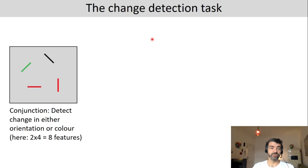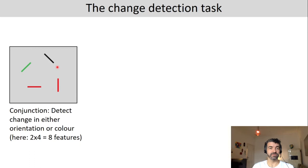In the change detection task, you can also use so-called conjunctions — items with two features, for example orientation and color. The question is: how are these items stored in working memory? Is there a slot for an entire item, or a slot for individual features? If it was for individual features, you would need eight slots to store four items with two features each — four orientations and four colors. If entire objects are stored with all their features, you would only need four.